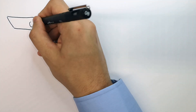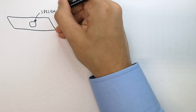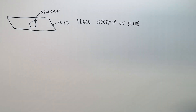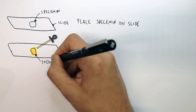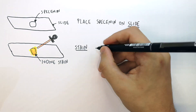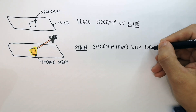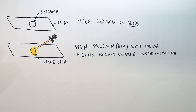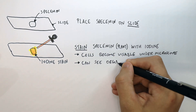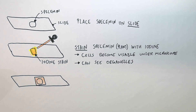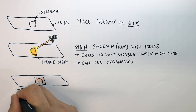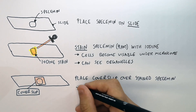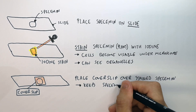Firstly, place the specimen onto the slide. You then use an iodine stain — if it's a plant — to stain the specimen. This makes the cells visible under the microscope so you can see the organelles. You then place a cover slip over the stained specimen, which keeps the specimen flat.